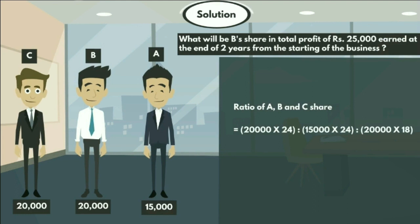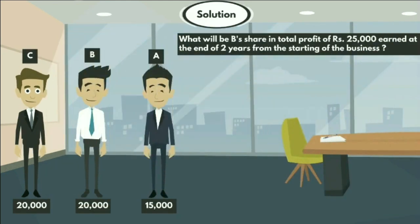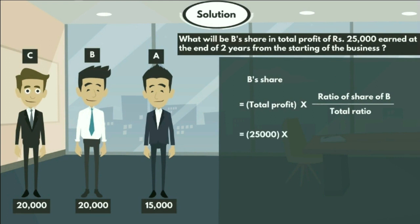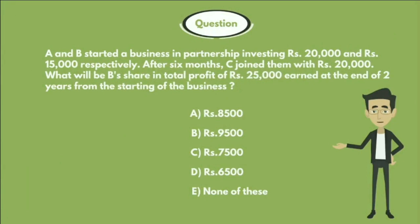After solving this we get 4 : 3 : 3. The question asks for B's share, so B's share equals total profit × (ratio of B / total ratio), that is 25,000 × 3 / (4 + 3 + 3). After solving this we get 7,500. So the share of B is 7,500 rupees, and the answer is option C: 7,500 rupees.